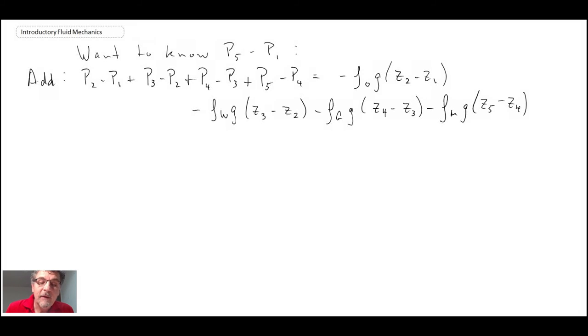Once we've done that, first of all, on the left hand side we have the pressure. We can see that the P2 is going to cancel out with that P2. P3 is going to cancel out with that P3. And P4 will cancel out with that P4. So what we're left with is P5 minus P1 on the left hand side.